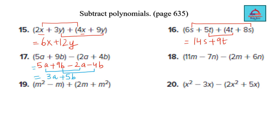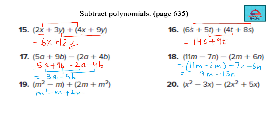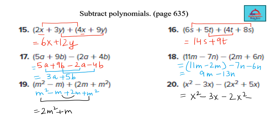Let's do one more. Subtract and change sign. So 11 minus 2 is 9m. 7 and 13 combine gives you 13n. Similarly, change sign and combine. Combine m squared with m squared — that gives you 2m squared. 2m and minus m gives you just m. For x squared minus 3x, because it is a subtraction the sign will be changed — it becomes negative. Combining gives minus x squared minus 8x.